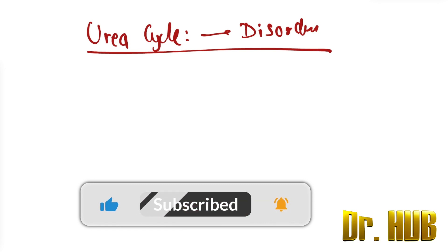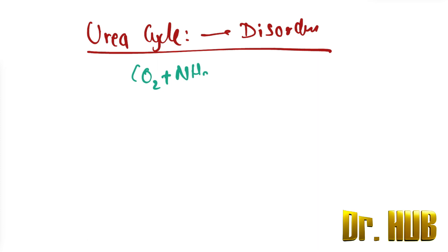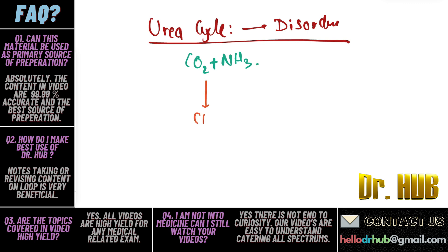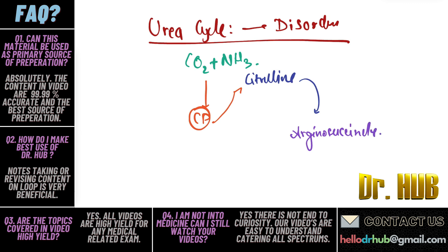In the urea cycle, first we have carbon dioxide plus ammonia — CO2 plus NH3 — which leads to carbamyl phosphate (CP). The carbamyl phosphate enters the cycle, where we have citrulline. Citrulline gives rise to arginosuccinate, arginosuccinate leads to arginine, and arginine leads to ornithine. Then ornithine gives rise back to citrulline, completing the cycle.